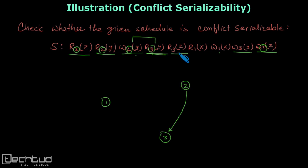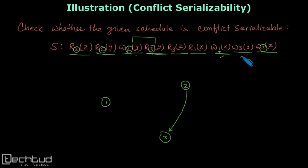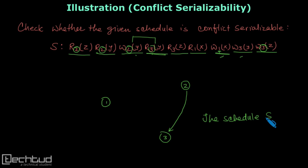Now R3Z: on Z we check for operations, but the operation on Z is from the same transaction, so again no edge and no conflicting operation. Now R1X: on X we have another operation, but it is from the same transaction, so it is not conflicting. As we do not have any cycle in the graph, this schedule is conflict serializable.